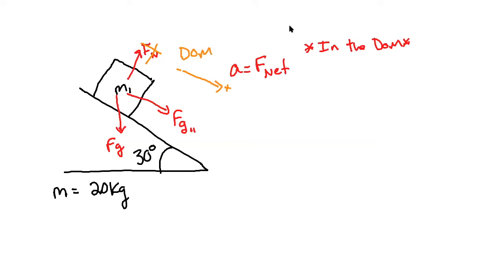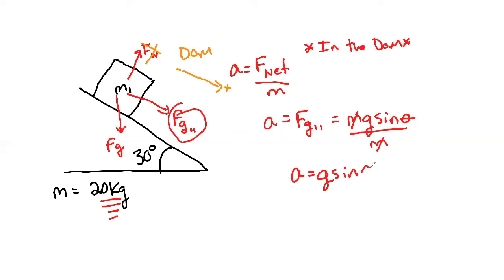That is going to be equal to F net over M. We see that A, the only force acting in the direction of motion, is Fg parallel, which is going to be equal to Mg, sine makes it slide, theta, divided by M of the box. But it turns out I gave you the M, but I didn't even need it. A is equal to, this is going to cancel out, G sine theta.